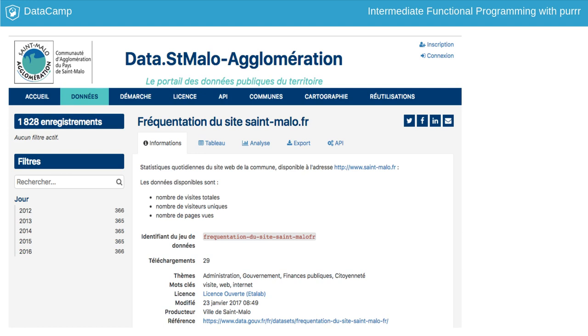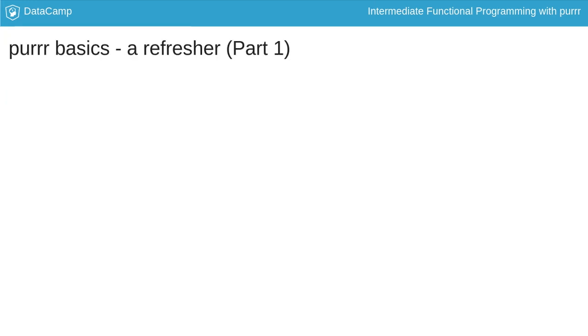This list format is one you regularly encounter when carrying data on the web, notably when you have to deal with the JSON format, which is parsed as a nested list in R. Let's start with a refresher of Purrr basic functions using these three lists.